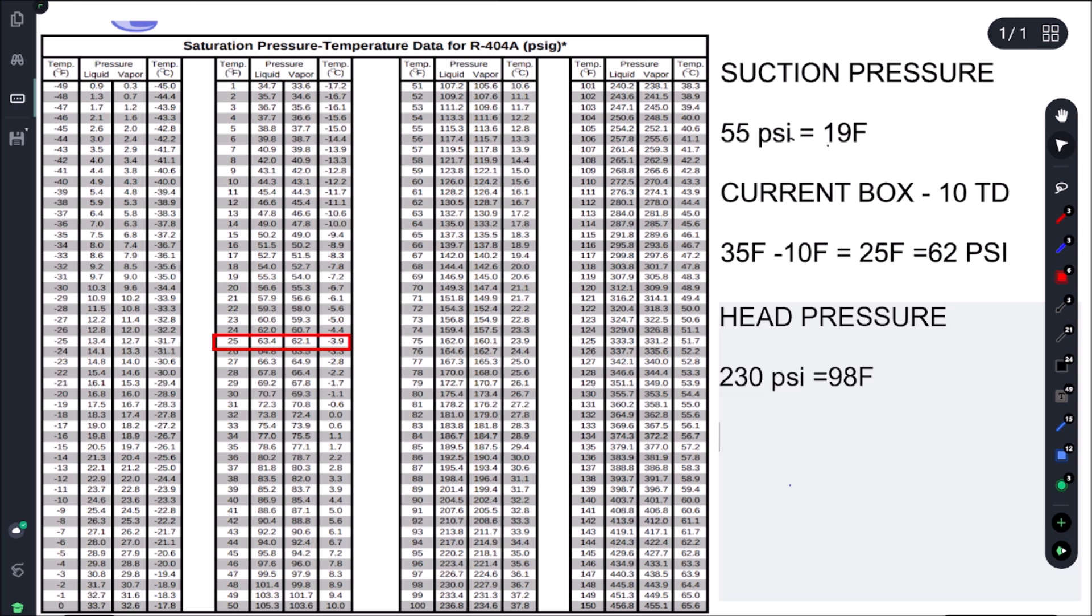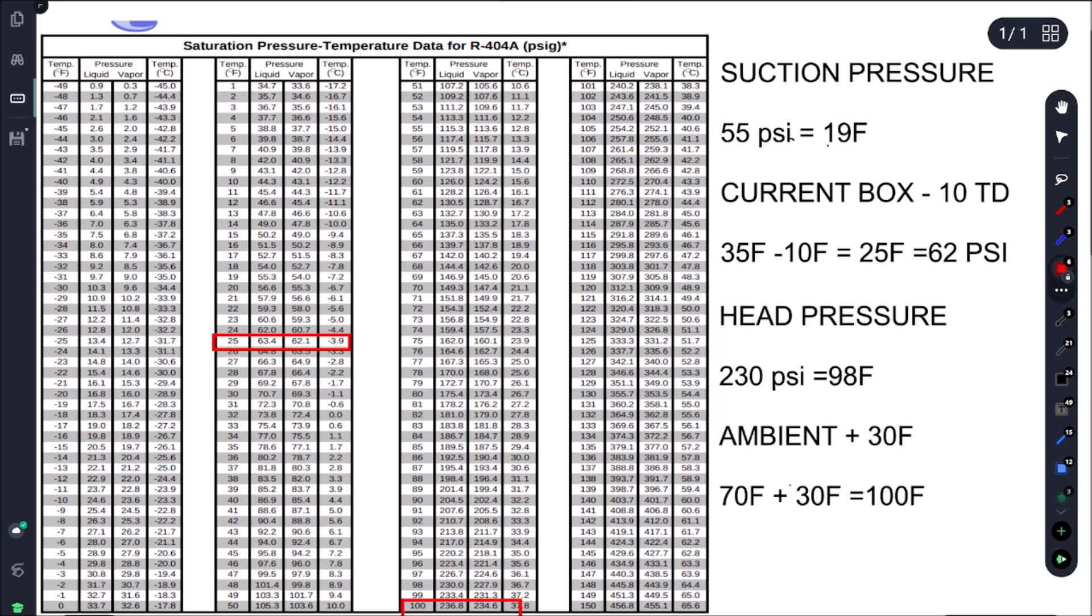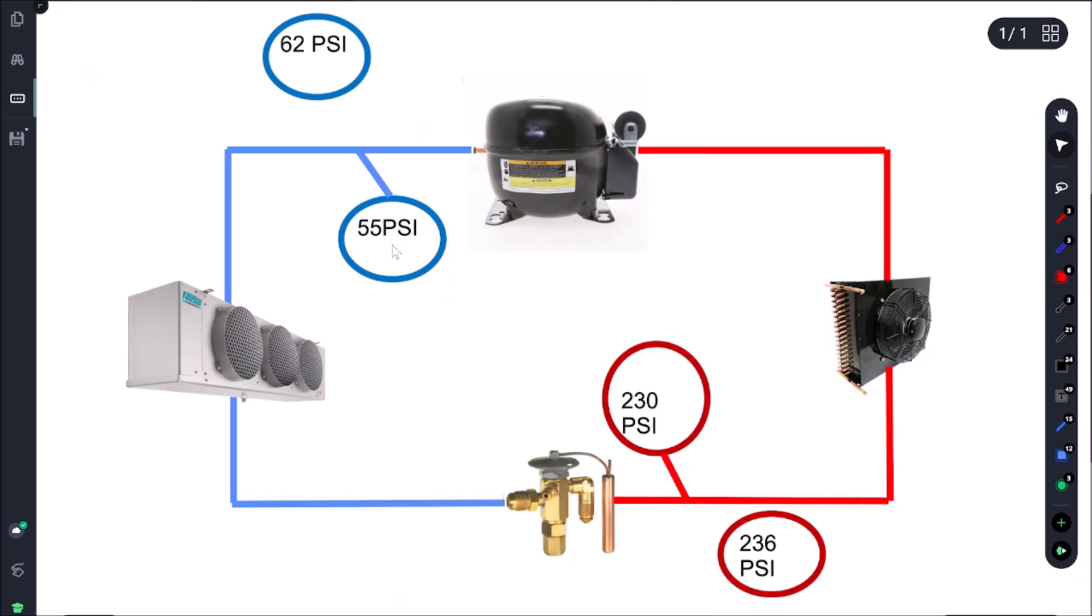And then let's go look up our head pressure. So that's really easy. We just take our ambient and we're going to add our condenser split. In this case, our condenser split's 30. So we're 70 Fahrenheit plus 30 Fahrenheit, which would give us 100 Fahrenheit. And 100 Fahrenheit is going to give us 236 PSI. So let's go over to our refrigeration cycle chart, plug in our values, and see what's going on. All right, so we're getting 55 PSI, we're looking for 62 on our suction side. And then our head pressure, we're getting 230 and 236.